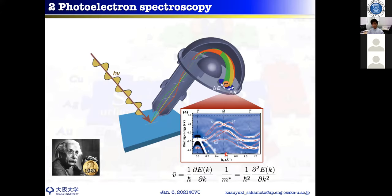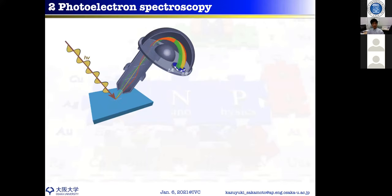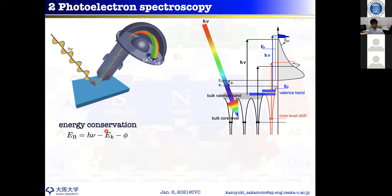From the band dispersion — momentum or wave vector on the x-axis and binding energy on the y-axis — you can get information about the velocity of charge and the effective mass, which gives information about carrier mobility. By measuring the electronic structure, you can understand how charge behaves inside the material. Photoelectron spectroscopy uses two conservation laws: the first is the energy conservation law.